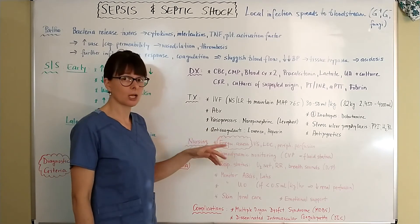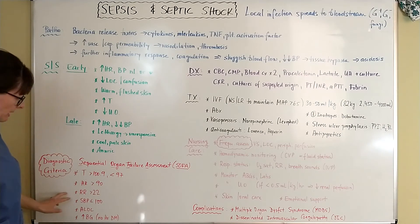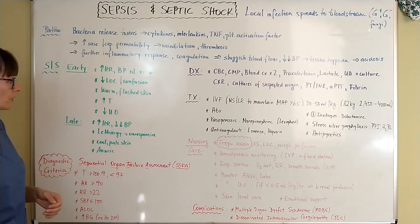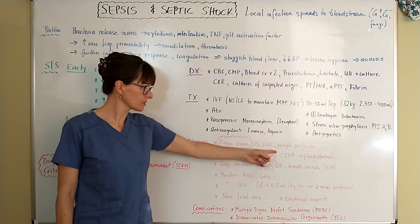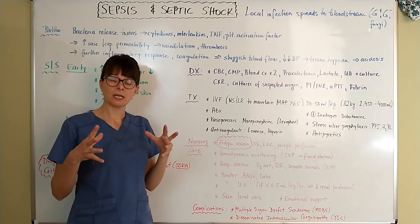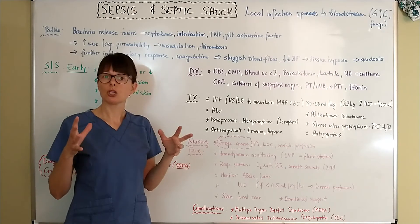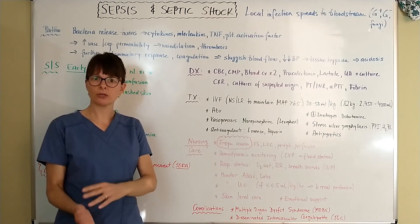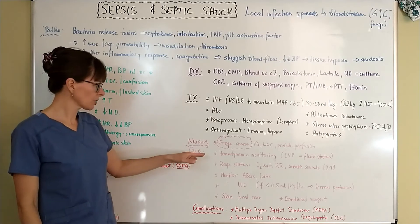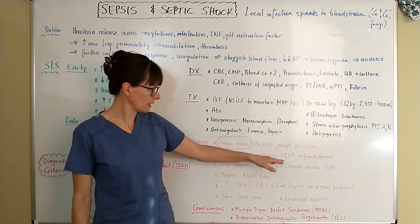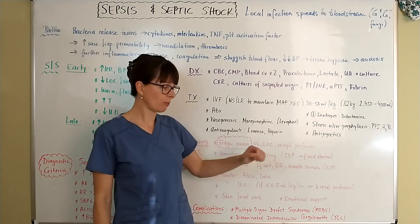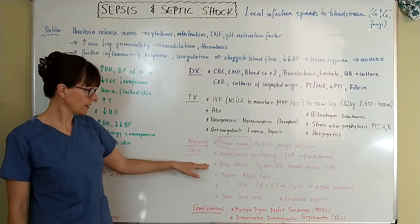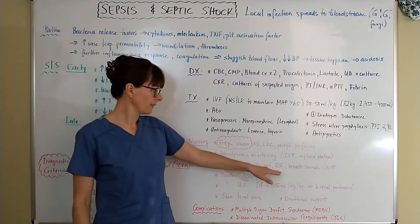For nursing care, we need to frequently assess the patient — this cannot be stressed enough — so that we can find these subtle diagnostic changes and identify the patient at risk for sepsis or septic shock early enough to intervene. Frequent assessment of vital signs, level of consciousness, and peripheral pulses is essential, because as vessels dilate, the body shunts blood away from non-vital areas such as skin and peripheral pulses will decrease. The patient may need hemodynamic monitoring such as a central line for central venous pressure monitoring, which gives us an idea of the patient's fluid status.